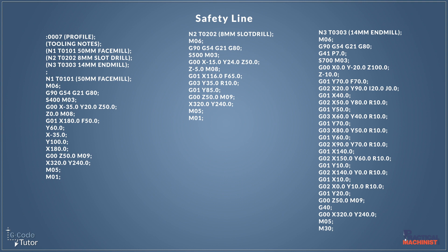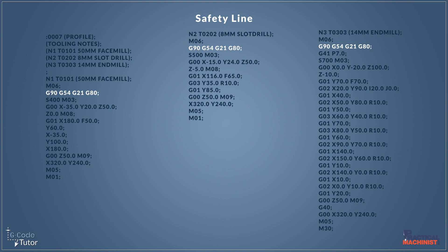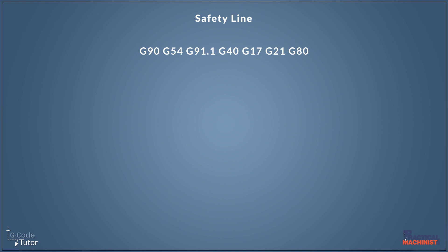Here's an example program and here are the safety lines in this program. It must be noted that safety lines are different depending on your needs. We may see some different things inside our safety line, and it would be different on each machine depending on the program we are running. This is a typical safety line pulled from a CNC lathe program, but we also use them on milling machines and routers.